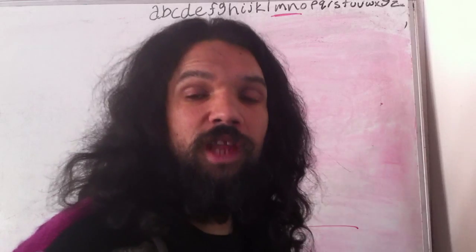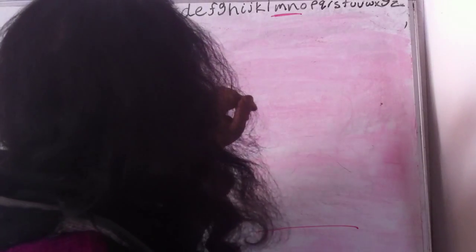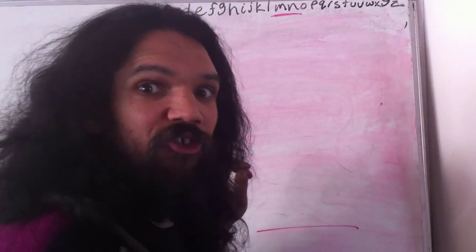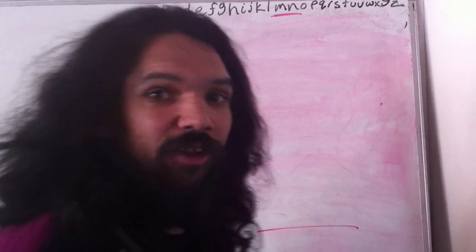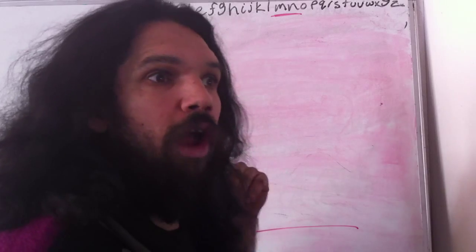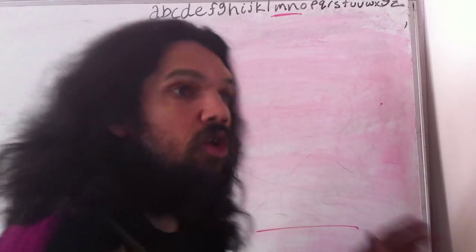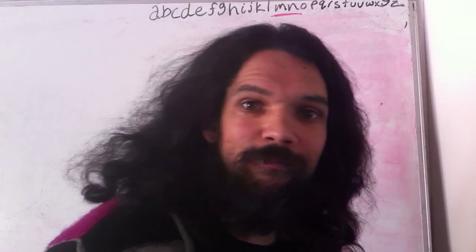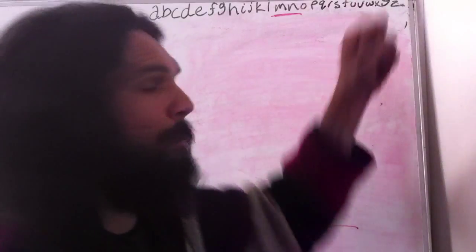Most European languages just name the first few characters. So we have alphabet in English, which is simply the Greek first two characters. We have abetse, or abetse de, or alphabeto. And these are all variations of just naming a couple of the characters. It's not a name for the whole set. And it certainly doesn't tell us anything about it.